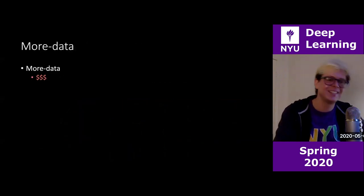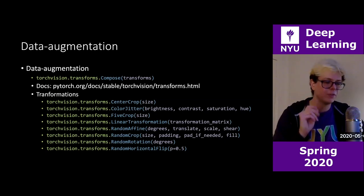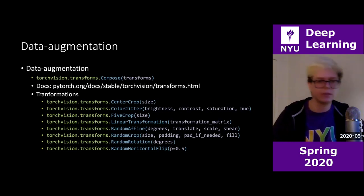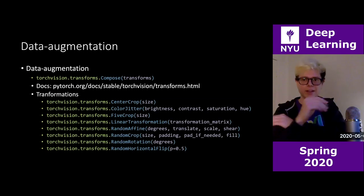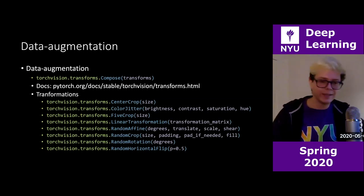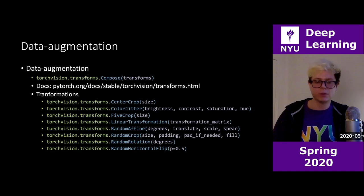More data, of course — just provide more data and you'll fight overfitting. And data augmentation is also a very valid technique: provide deformed versions of the input. For images, we have center crop, color jitter, different crops, affine random transformations, random rotation, horizontal flip. If you flip my face, I'm still me. You provide perturbations that you want the network to be insensitive to, and it will learn to be insensitive to those kinds of variations.